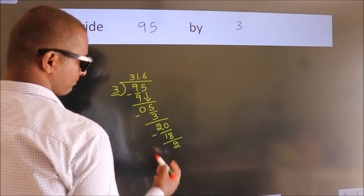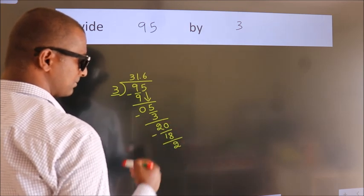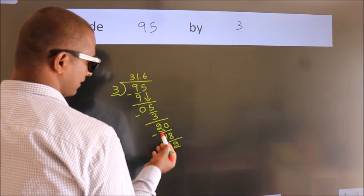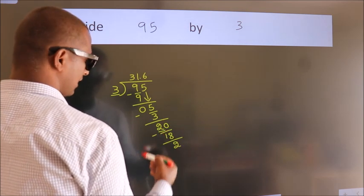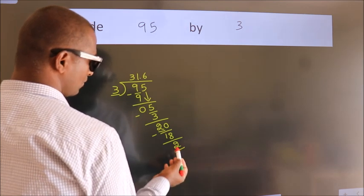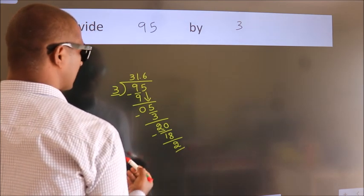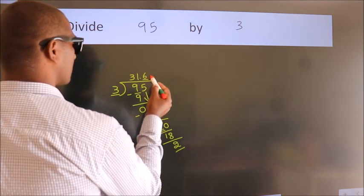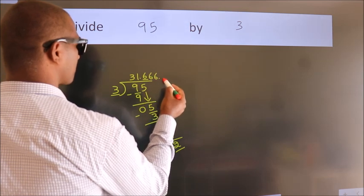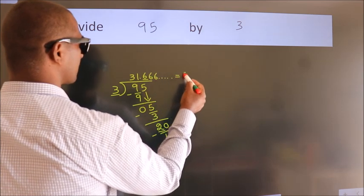We get 2. Now, you observe. We had 2 here, and we got 2 again. That means this number keeps on repeating. So, this is our quotient.